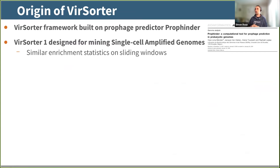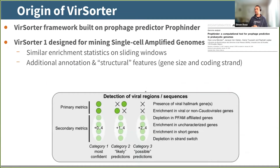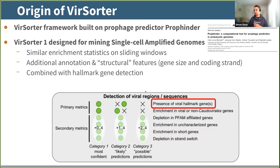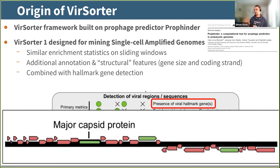The reason we developed VSorder1 was to mine single-cell amplified genomes — similar data but more fragmented and more novel. We used the same statistics on sliding windows but added more features. Instead of just looking for phage-like regions, we also looked for regions with little to no gene annotation, because that's typically a signature of something different from regular bacteria. We also looked for enrichment in short genes, strand switches, etc. One aspect we especially focused on in VSorder1 — and also use in VSorder2 — is anchoring predictions on viral hallmark genes.